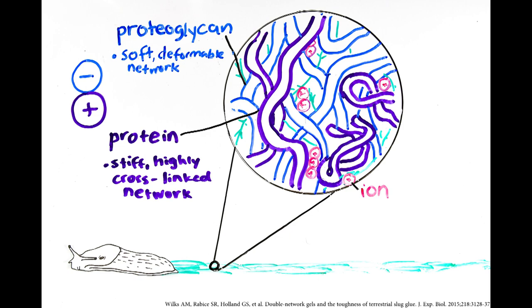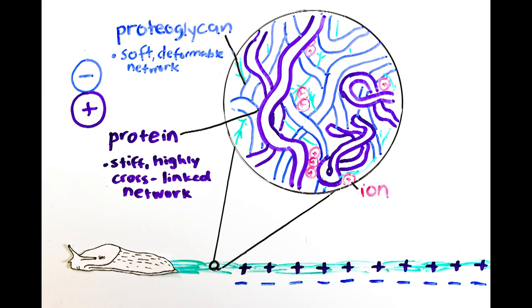To stick slugs to different surfaces, the net positive charge of the slime binds with the slightly negatively charged surfaces in the environment. The slime also sticks by intertwining its protein strands with the materials around it.